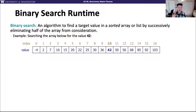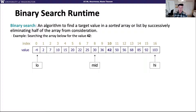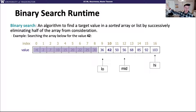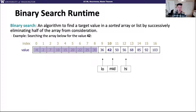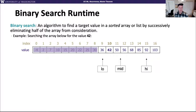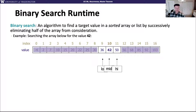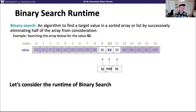Let's walk through an example. Say we're looking for the value 42. We start low and high at the ends and compute the midpoint to be 30. Since 42 is greater than 30, and the array is sorted, we can get rid of the left half of the array — we know 42 can't be there. We update low to be bigger than the old midpoint. On the next recursive call, the midpoint is 56. Since 42 is less than 56, it has to be on the left side, so we eliminate the right half. We repeat: the midpoint is 42, and we return index 10. You would keep going until there's only one element left, at which point if it's not the value you're looking for, you return negative one.